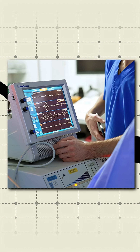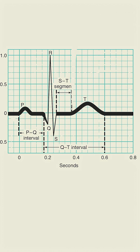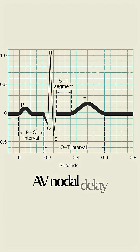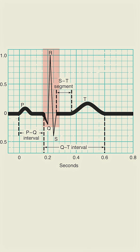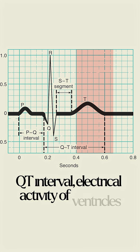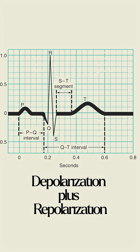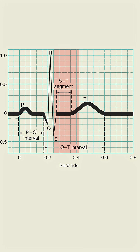Doctors love measuring intervals. PR interval: from start of P to start of QRS — atrial depolarization plus AV nodal delay. QRS duration: how fast ventricles depolarize. QT interval: electrical activity of ventricles — depolarization plus repolarization. ST segment: ventricles are fully depolarized — this is where ischemia or MI shows up.